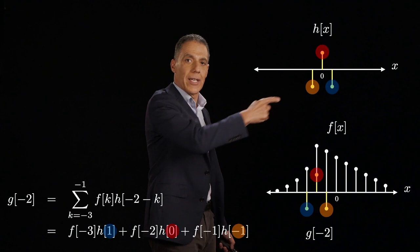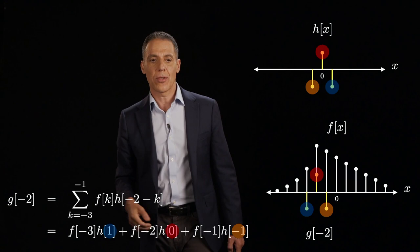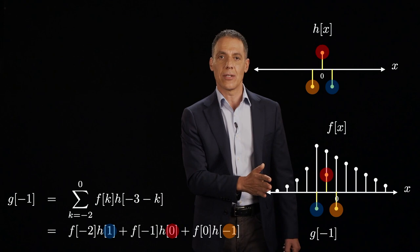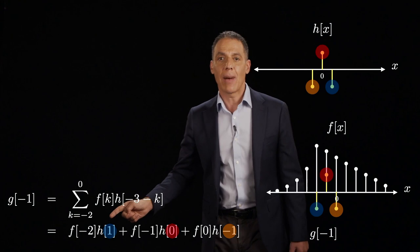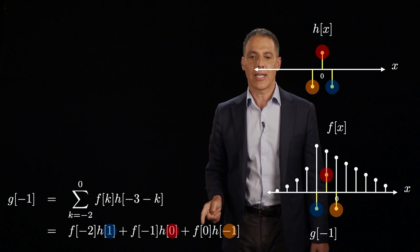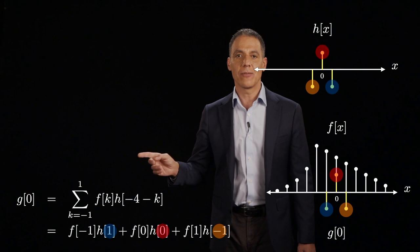I've color coded here everything. So the red hits the red, the blue hits the blue, and the yellow hits the yellow. There's that crossover again because of the negative sign in the convolution sum. Now, I want to know what is the value of g at the next sample. Let's go to the right. So g of -1 is I slide the signal over by 1, and now my sum is -2 to 0 because I'm centered at -1, and it's the same game. Take f of -2 and multiply it by h of 1, f of -1 and multiply it by h of 0, f of 0 and multiply it by h of -1. Sum everything up and I get the value of g of -1.